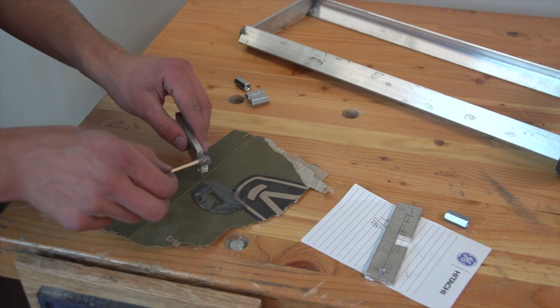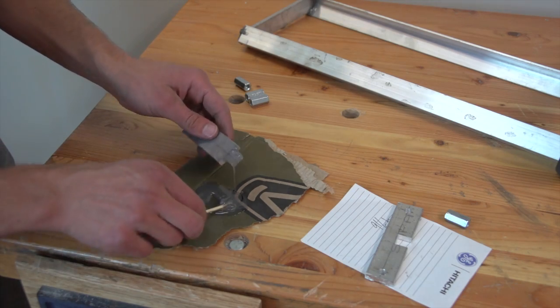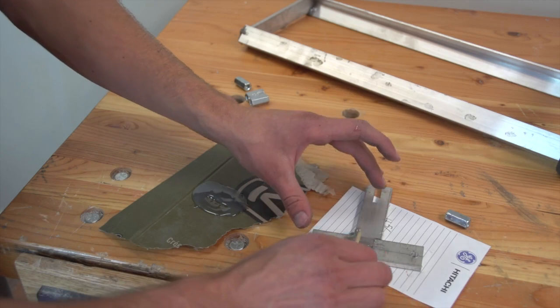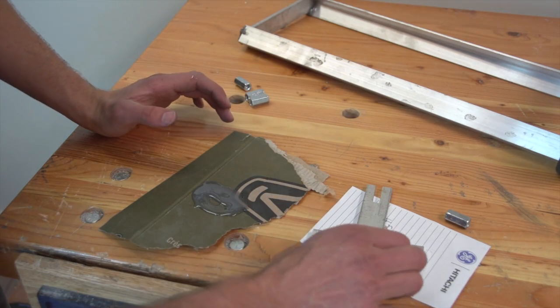Next, mix some new epoxy and apply some to the joint of the dolly. Lay the dolly on a piece of paper and apply a coat of epoxy to the top, working it into any gaps in the joint. Leave it to harden.